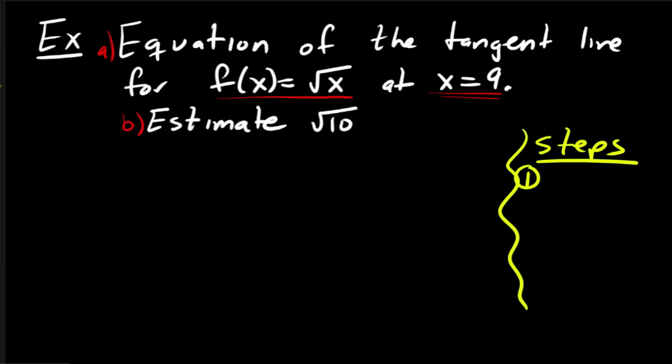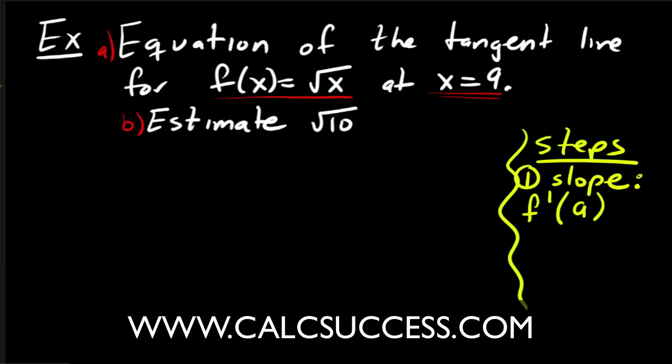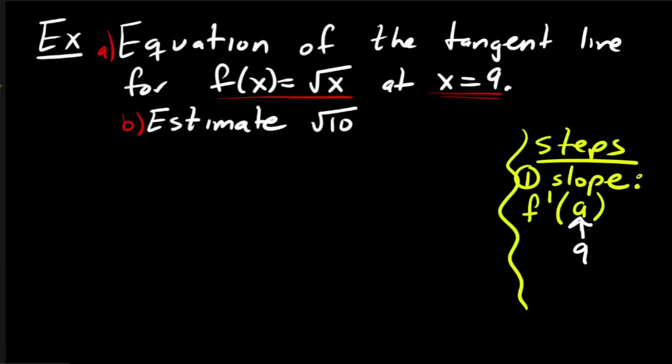So the first thing you do is you want to find the slope, and to find the slope, you're going to find the derivative at whatever point you need. Now in this case, my a that I'm writing down here, that's going to be 9. So remember that the derivative at a point gives you the slope of the tangent line, and so here since I'm looking for the slope of the tangent line of this function at 9, that means that I'm going to find the derivative at 9.